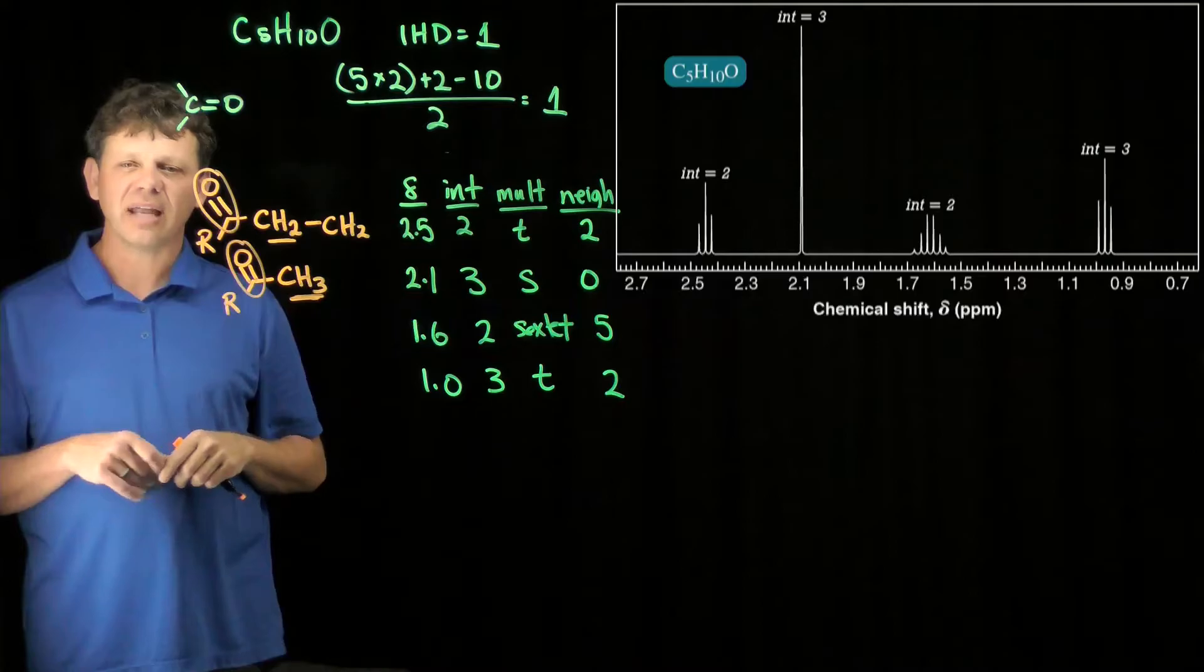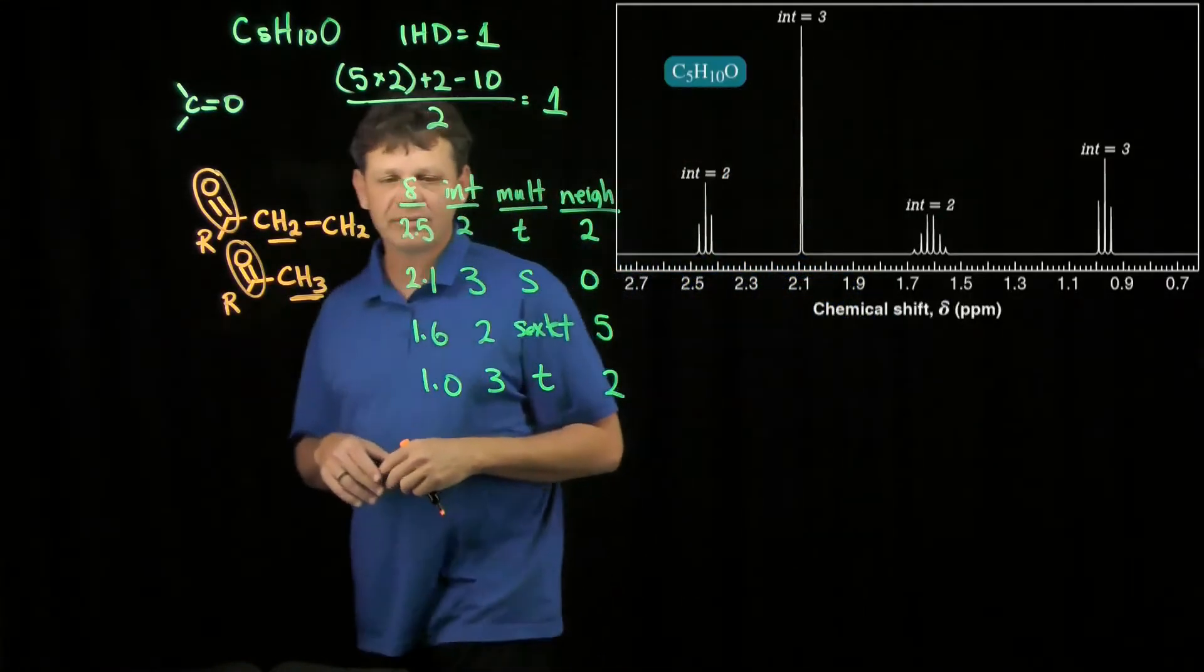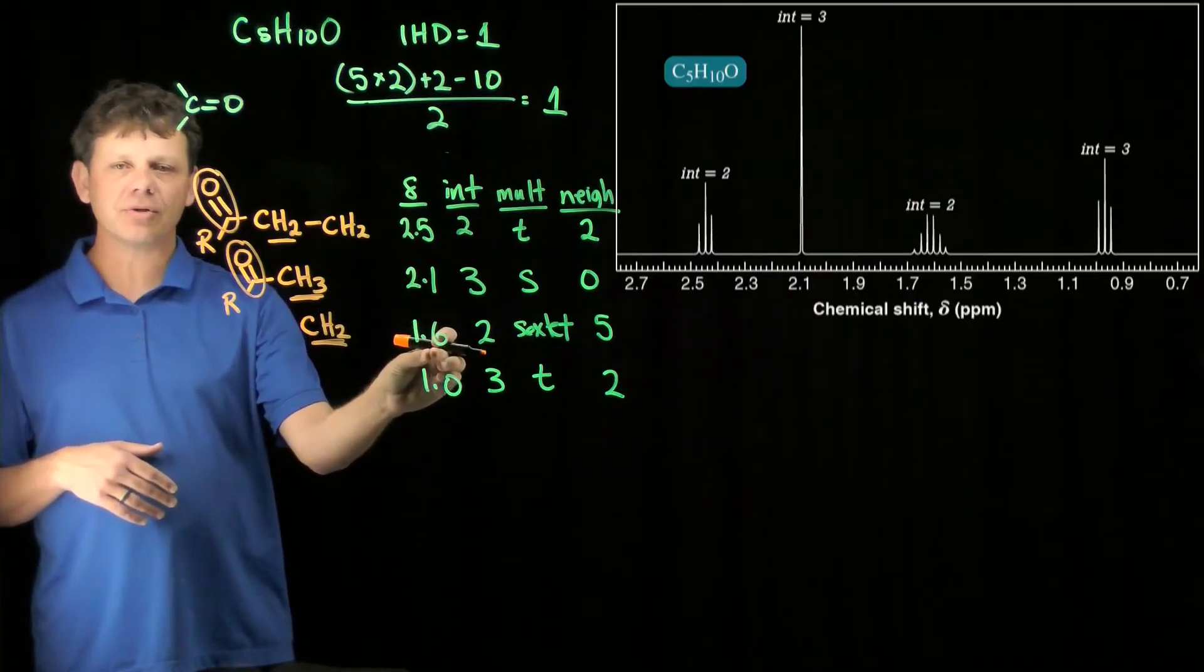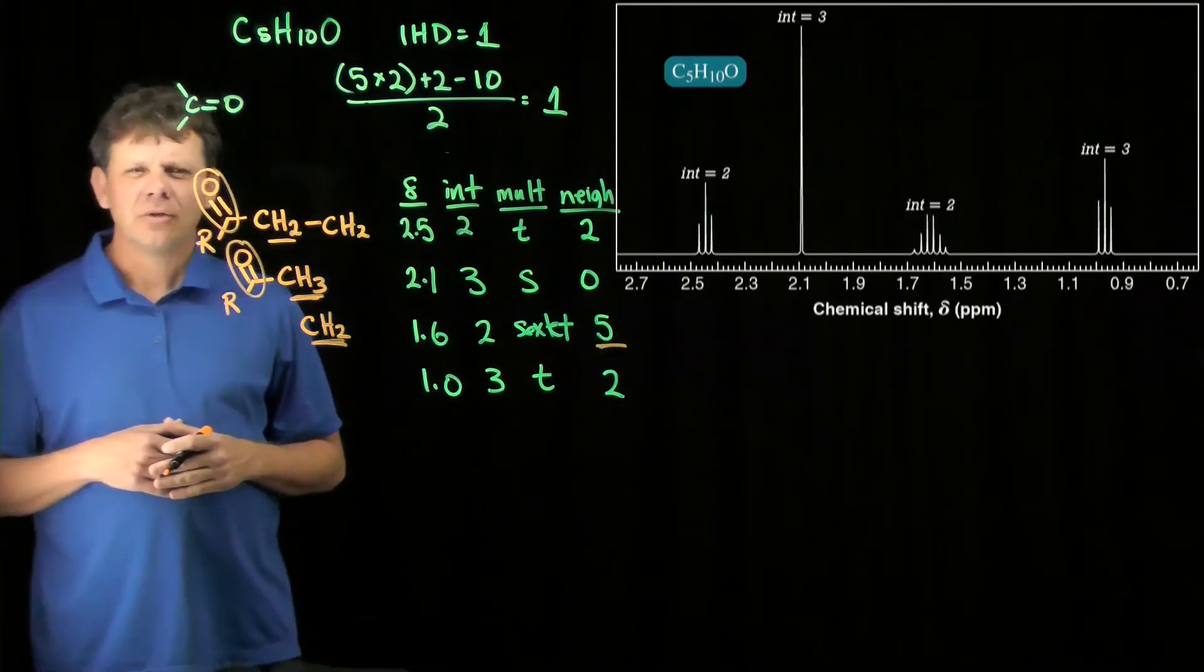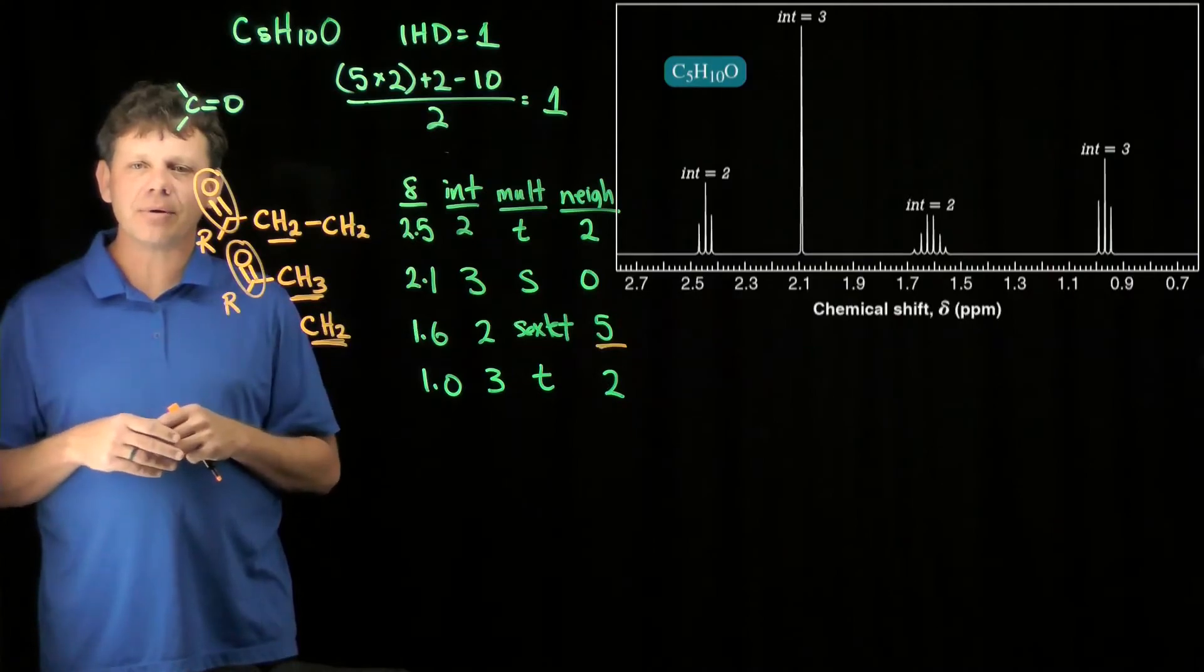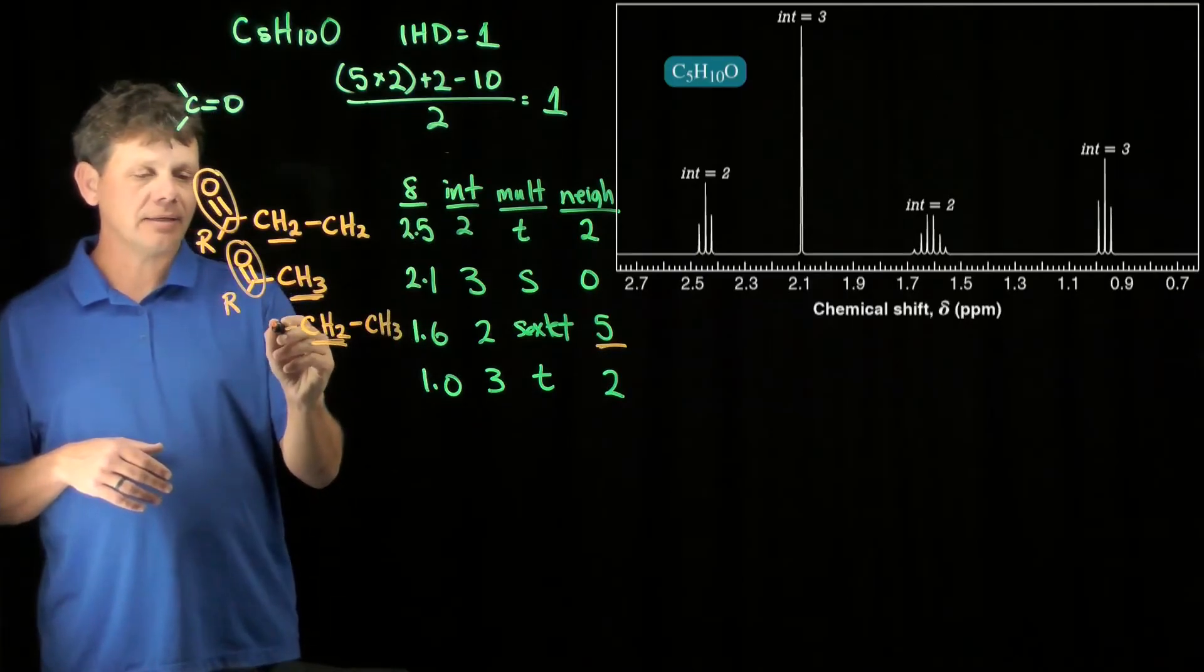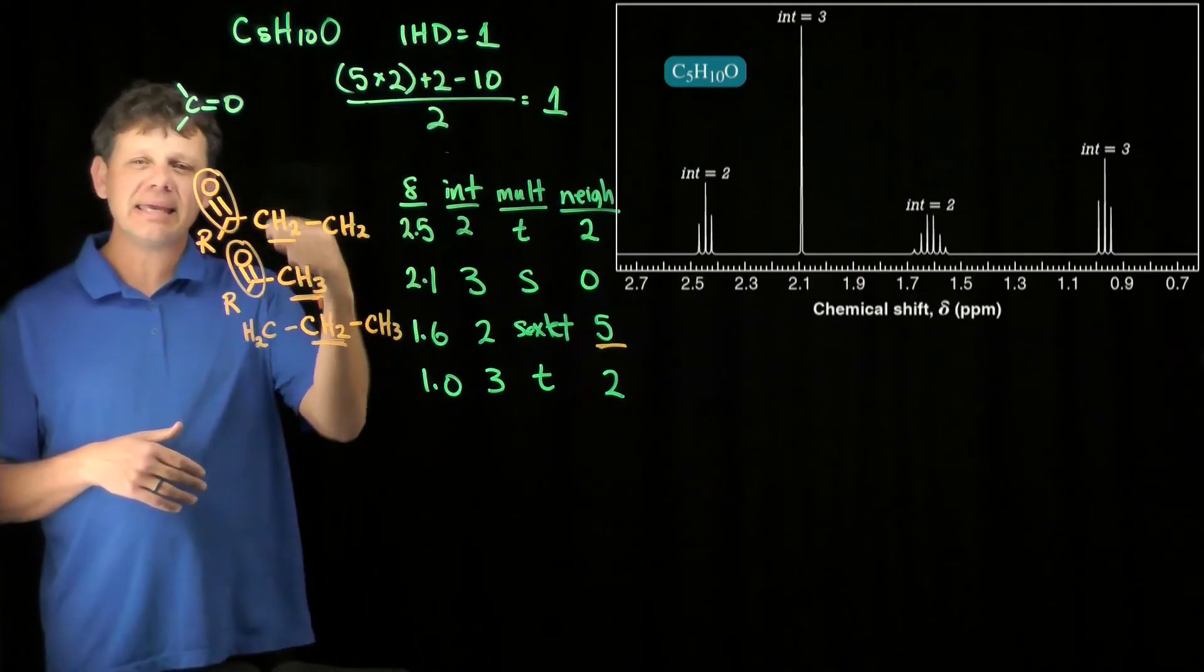We can do the same thing at 2.1. At 2.1, we now are integrating to 3, so our guess is that's probably going to be a CH3. Now what's it next to? It's got zero neighbors. We know that whatever it's attached to with three hydrogens, we can only have one other bond and whatever it's attached to has zero neighbors. That chemical shift is telling us something else. Being in that range of 2.1 to 2.5 suggests next door to a carbonyl. So this CH3 might also be next to a carbonyl. We'll put an R because we don't know what's on the other side. Or do we? In fact, we do know what's on the other side. This carbonyl and this carbonyl are the same. We've kind of started to piece together that we've got a CH2 and a CH2 on one side, a CH3 on the other side.